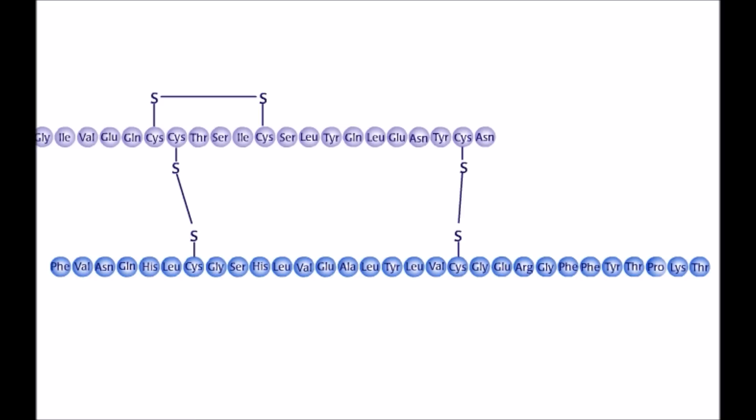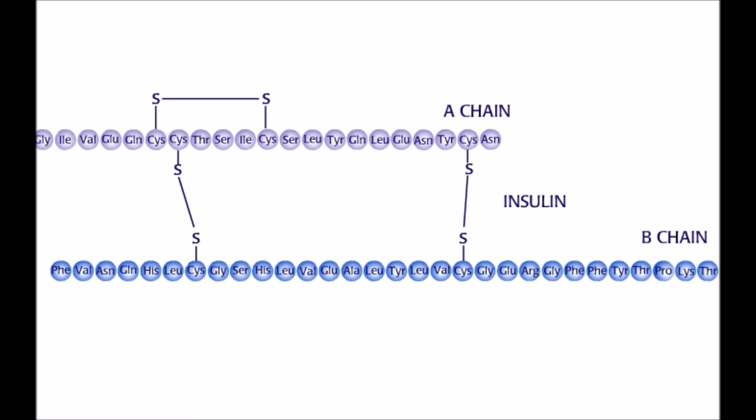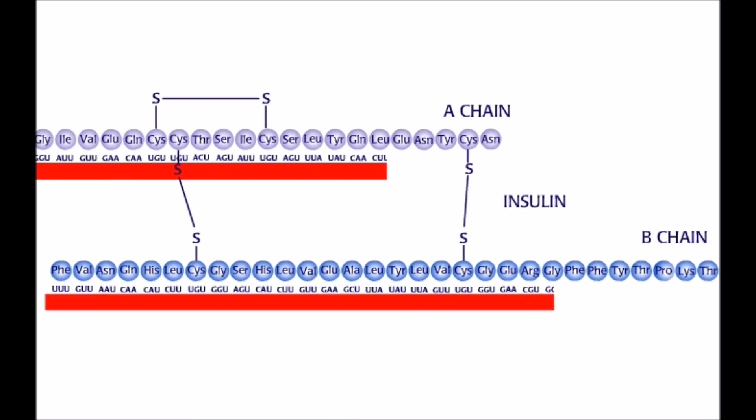In order to get bacteria to make insulin, first DNA is made based on the protein sequence of two insulin chains, A and B. These DNA fragments are inserted into plasmids.